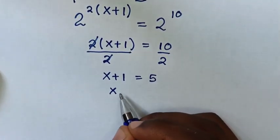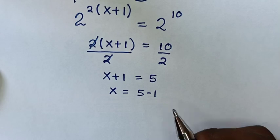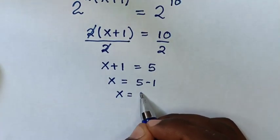Then x is equal to, we will take 1 to the right side so it will be 5 minus 1. Therefore x is equal to 4.